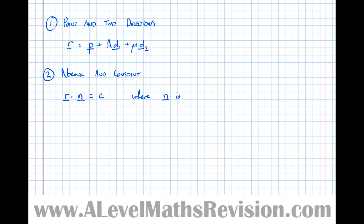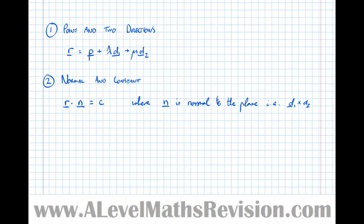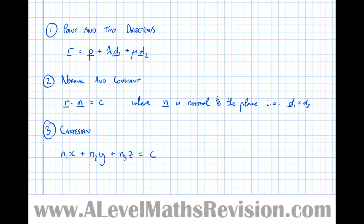Type 3 — Cartesian form: n₁x + n₂y + n₃z = c, where n₁, n₂, n₃ are the components of the normal vector and c is the same constant as in Type 2. These are the three representations of the equation of a plane that you're expected to use in an exam.